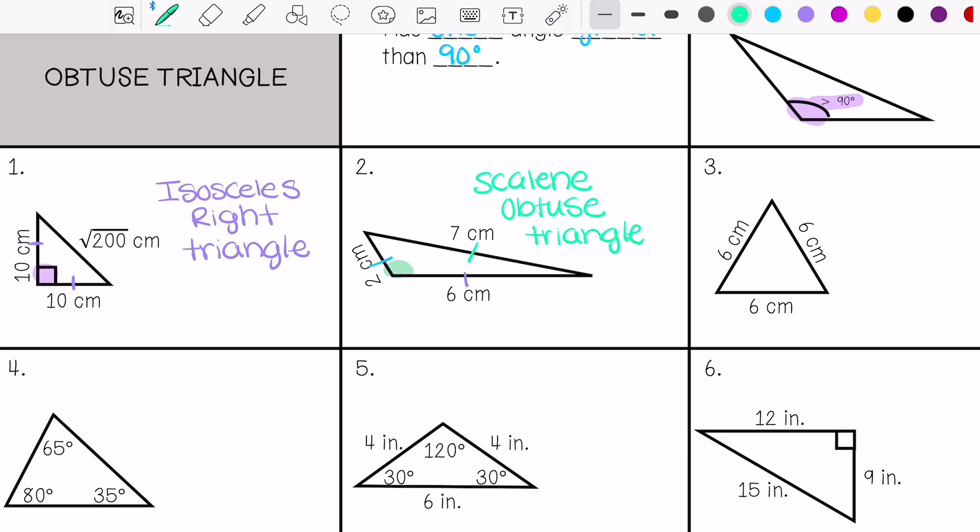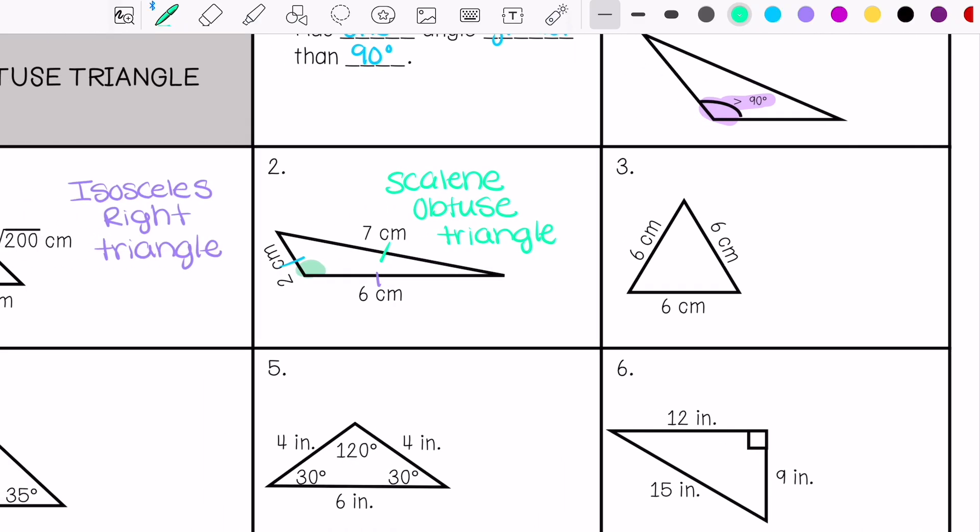Same thing with acute. If you line up for, like, number three, if you line up a piece of paper with one of those angles and you can't see the angle anymore and it doesn't exactly line up, then it's less than 90. So for number three, we have all equal sides, so we are equilateral. And then it looks like all my angles are acute, less than 90.